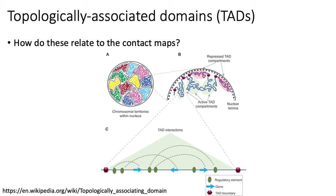One of the working hypotheses of what TADs represent is that their purpose is to increase the amount of cross-regulation between one enhancer and multiple target genes within the TAD. The boundaries established by CTCF binding sites also help prevent enhancers within a TAD from activating genes in other TADs or other regions of the genome beside this TAD.